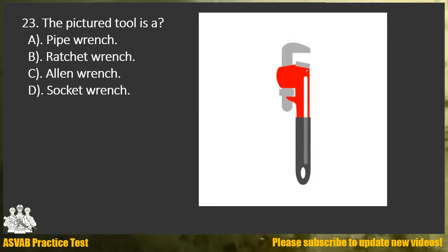Question 23. The pictured tool is: A. Pipe wrench. B. Ratchet wrench. C. Allen wrench. D. Socket wrench.